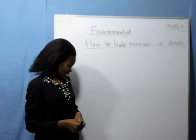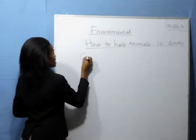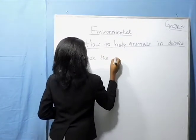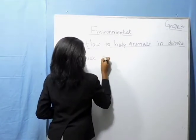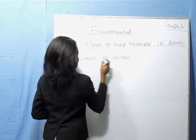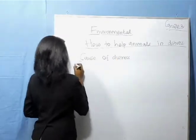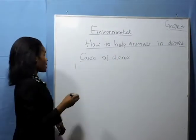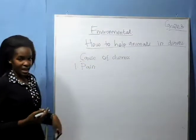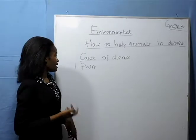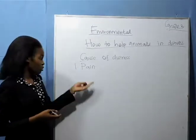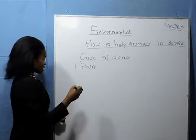Animals in distress — what causes distress in animals? Distress means the animal is suffering. The first cause is pain. When the animal is injured in any part of the body, it will experience pain. The animal will be distressed because of the pain.